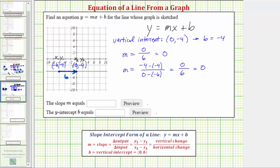So now to find the equation, we'll substitute negative four for b and zero for m. So we'd have the equation y equals zero times x, plus negative four, or just minus four. Simplifying we get y equals negative four.